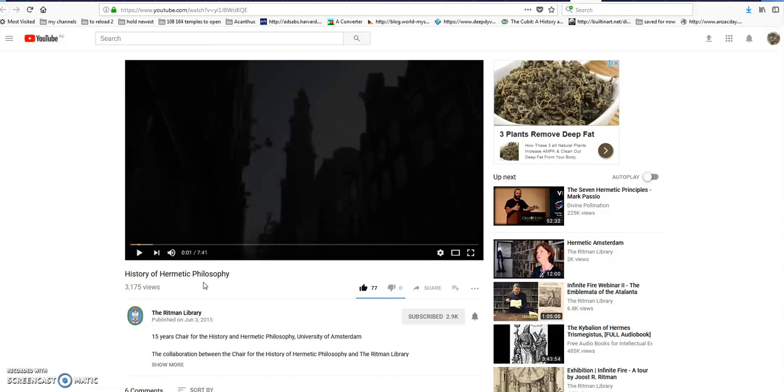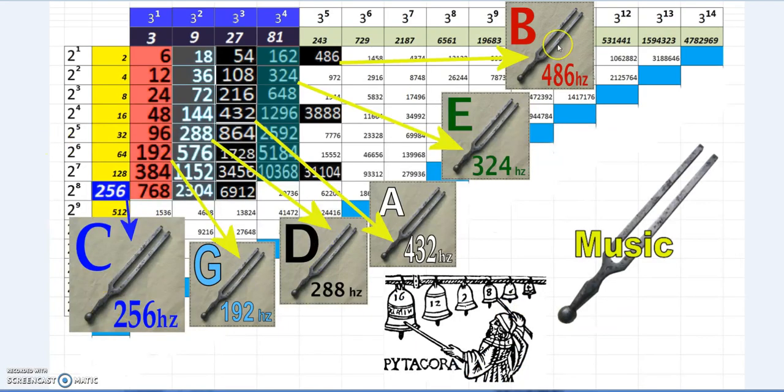They sort of go off on a Harry Potter tangent—not that there isn't some aspect of that in there—but the basis of it is the tangible elements rather than the more subjective interpretations. The Ritman Library, especially this particular episode on history of hermetic philosophy—links will be in the description—very interesting, highly recommended channel and videos.